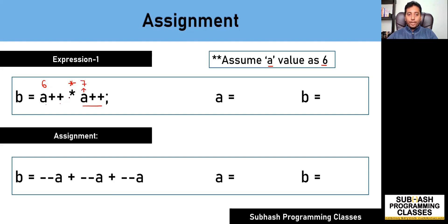So a becomes 7 because there is an increment happening in the previous sub-expression. Initially I fetched the value of 6, and by the time I reach the next sub-expression after the multiplication symbol, the value of a has been incremented to 7. So 6 multiplied by 7 is 42, which gets stored into b. After this expression, a would have been incremented twice from the initial value of 6, becoming 8. Therefore a = 8 and b = 42.